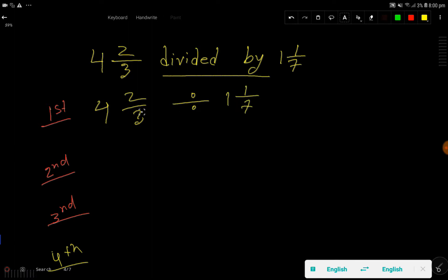We'll convert this mixed number into improper fraction. To do so, we have to multiply this whole number by this denominator, that is 4 times 3. Then we have to add this numerator and place the same denominator, 3.